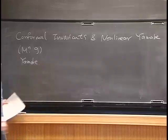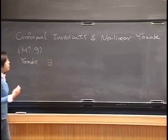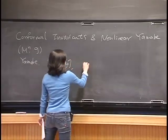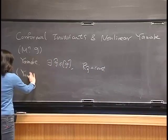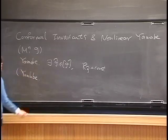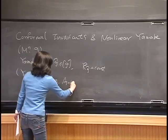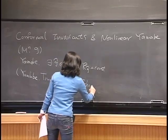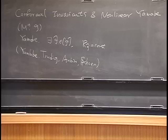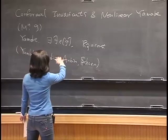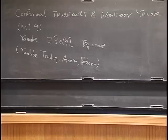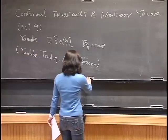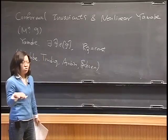The problem is called the Yamabe problem. It consists of finding a metric in a conformal class such that the scalar curvature is equal to a constant. This problem was proposed by Yamabe himself; he solved part of it, and then it was studied by Trudinger and Aubin. Finally, it was completely solved by Schoen. It can be viewed as a classification problem because it says every Riemannian manifold is conformal to a constant scalar curvature manifold. However, later we would like to get a more refined classification.